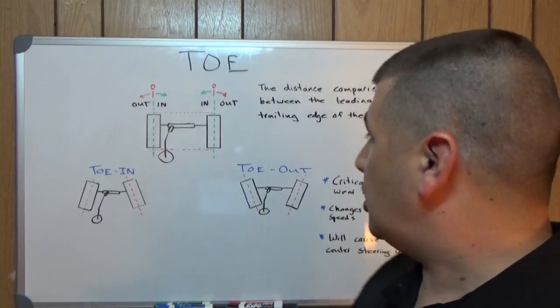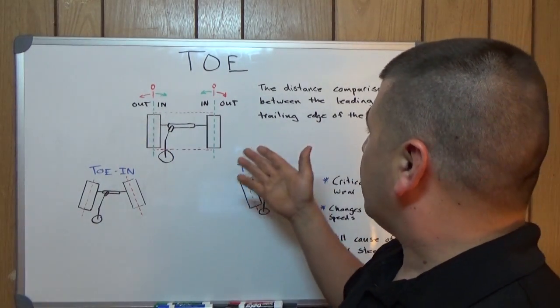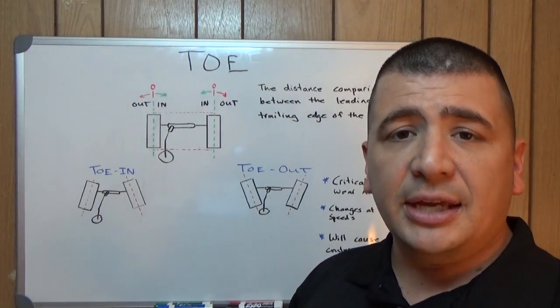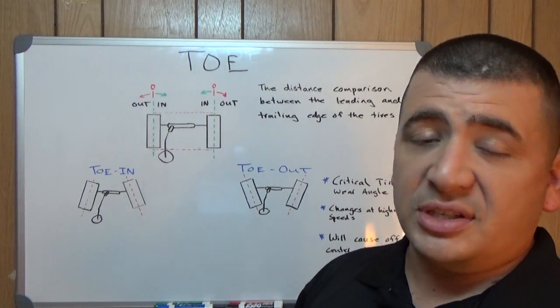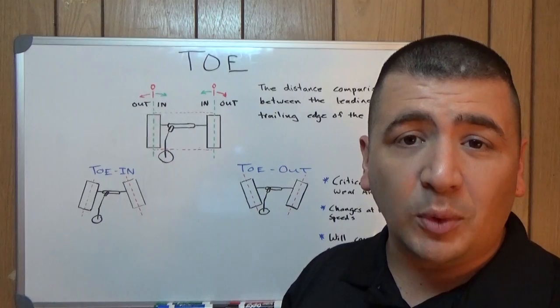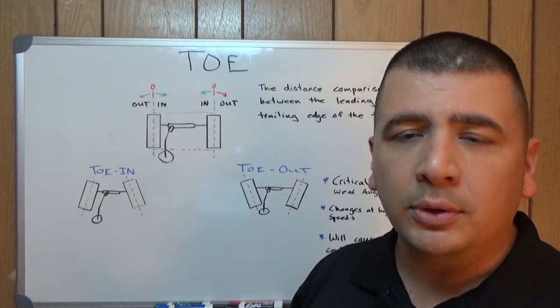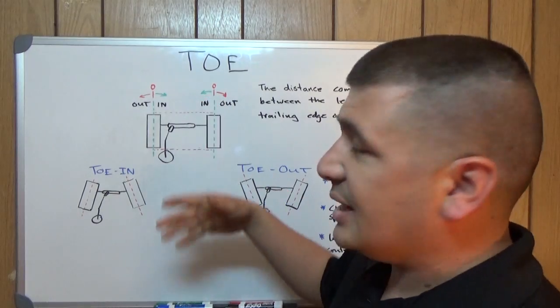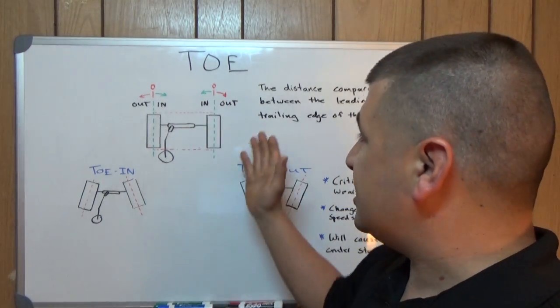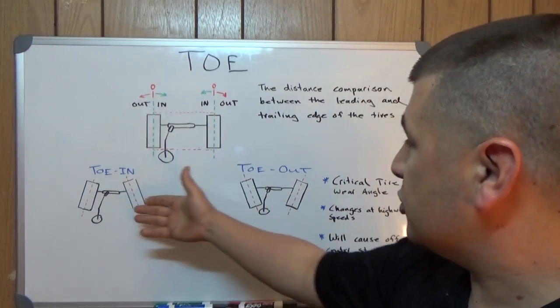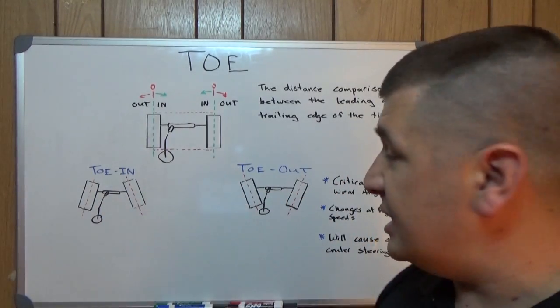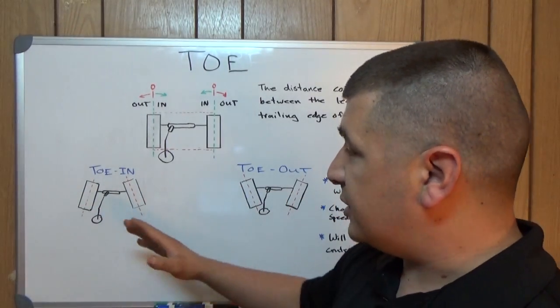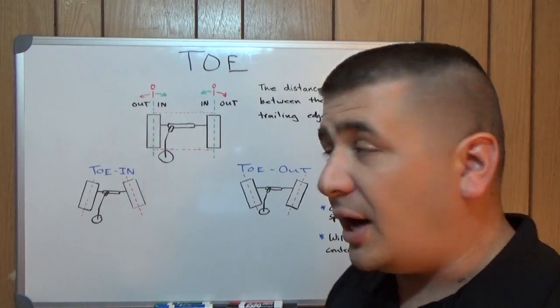Looking at the definition of toe, it is the distance comparison between the leading and trailing edge of the tires. Now the simple explanation is a lot more simple than the definition. If the front of your tires are facing in, you've got toe in. If they're facing out, you've got toe out. These are some exaggerated examples just to give you an idea of what direction the tires are going to face for toe in and toe out.